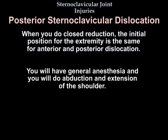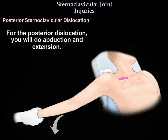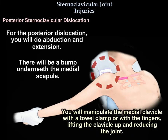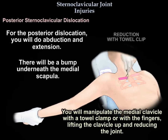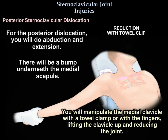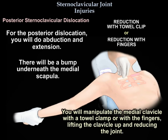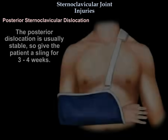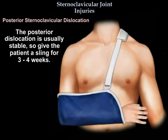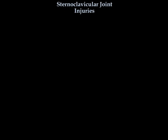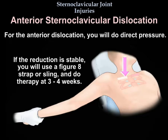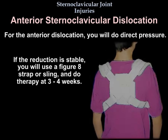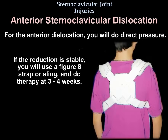You will have general anesthesia and perform abduction and extension of the shoulder. For the posterior dislocation, you will do abduction and extension with a bump underneath the medial scapula. Manipulate the medial clavicle with the towel clip or fingers and lift it up to reduce the joint. It is usually stable, so give the patient a sling for three to four weeks. For the anterior dislocation, apply direct pressure; if the reduction is stable, use a figure-eight or sling and begin therapy at three to four weeks.